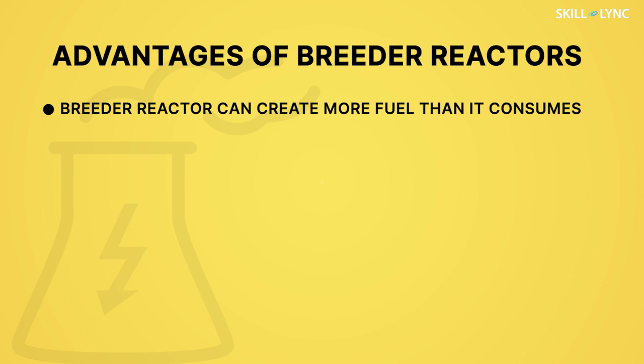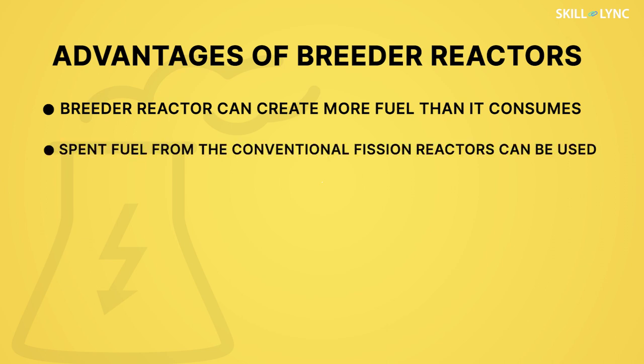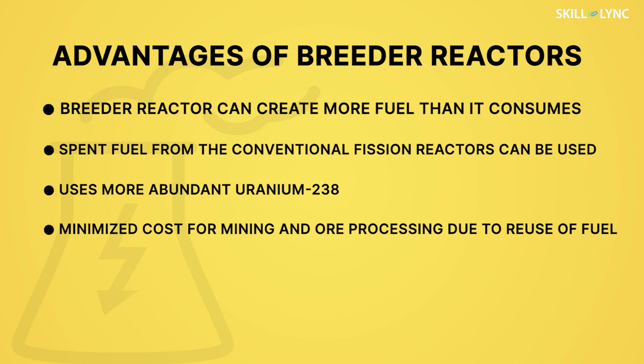There are other advantages of breeder reactors. A breeder reactor can use the spent fuel from conventional fission reactors. Apart from using spent fuel, breeder reactors use uranium-238, which is far more abundant than uranium-235. One more advantage of reusing the fuel is that the costs for mining and processing of ore are minimized.